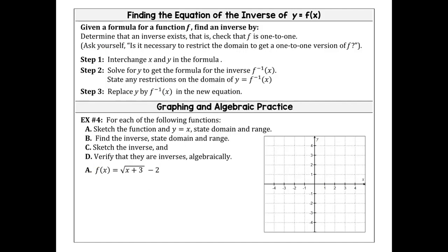We're going to start with the square root function. To begin, we're going to talk about its domain and range. We have a square root function that was shifted to the left three units and down two units — that's the square root of x plus 3 minus 2. So x has to be greater than or equal to negative three.